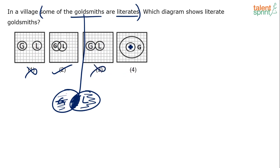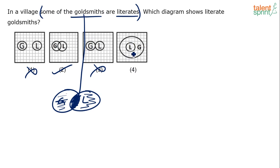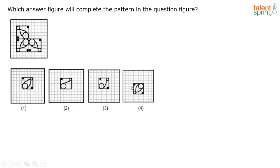The fourth diagram shows that all the literates are goldsmiths, but that is not definite. What we only know is some of the goldsmiths are literates. If some goldsmiths are literate, then some literates are goldsmiths — that is definite. But all the literates being goldsmiths is just a possibility, not a definite conclusion. So option four is also eliminated. The answer is option two.